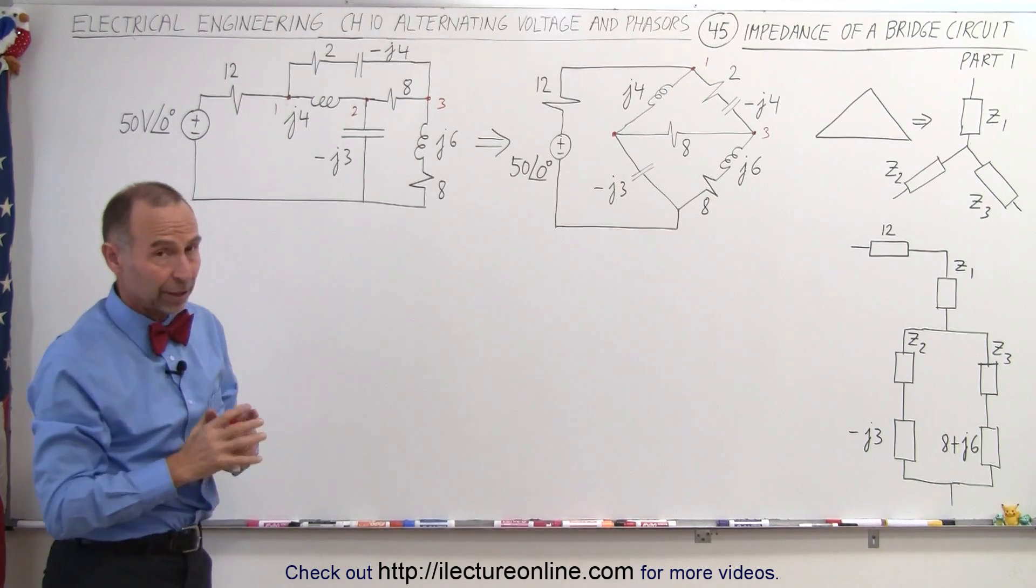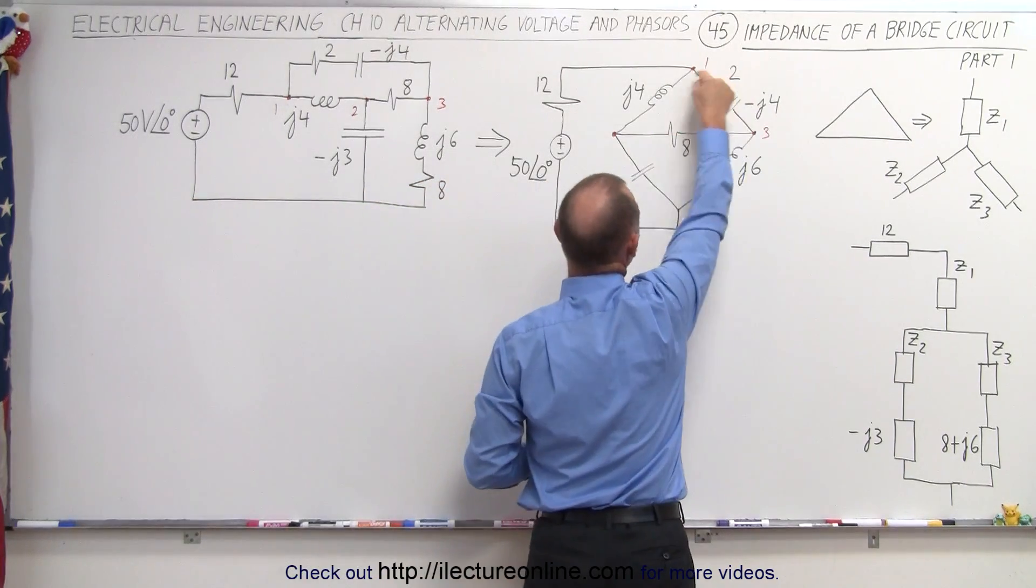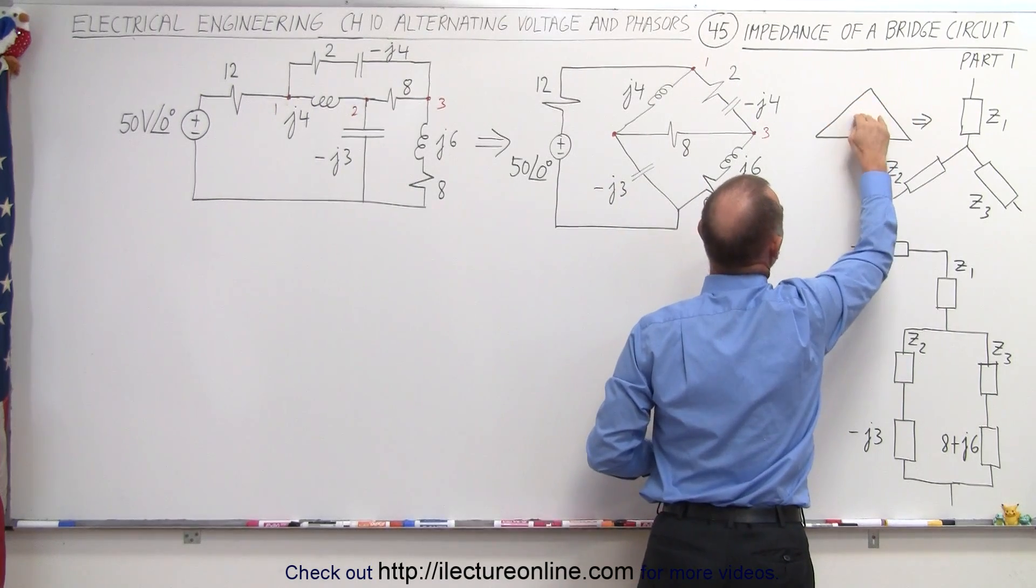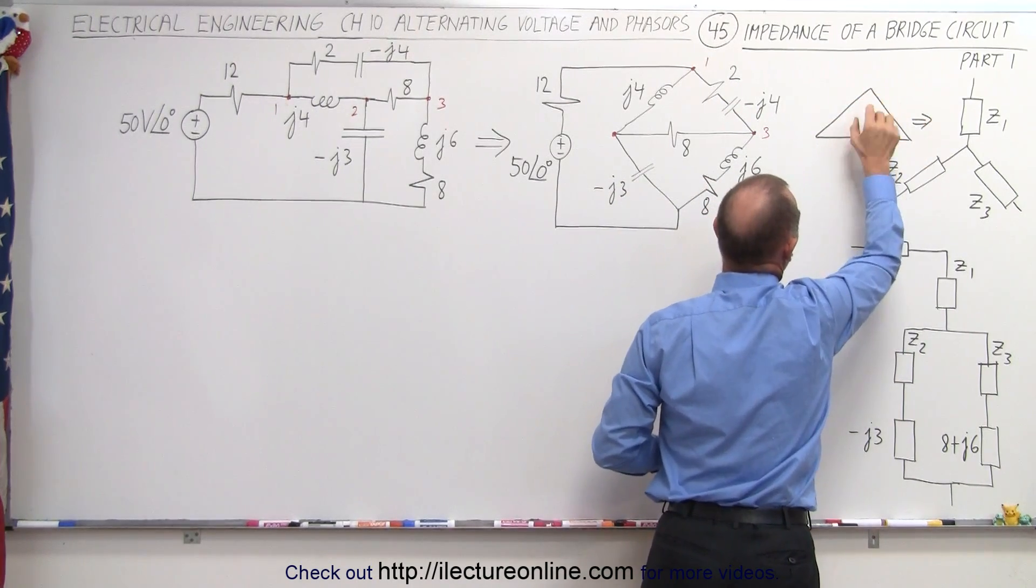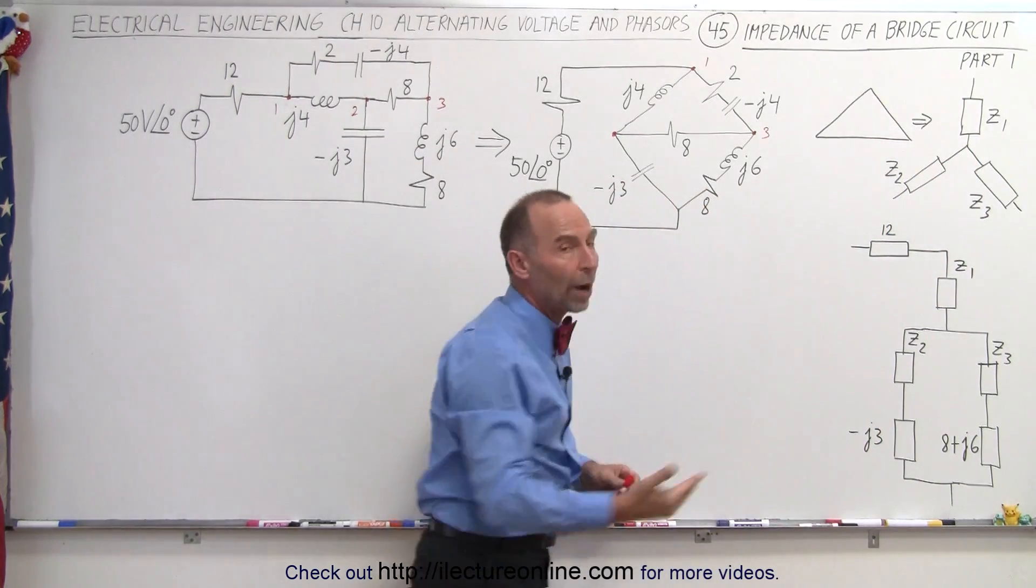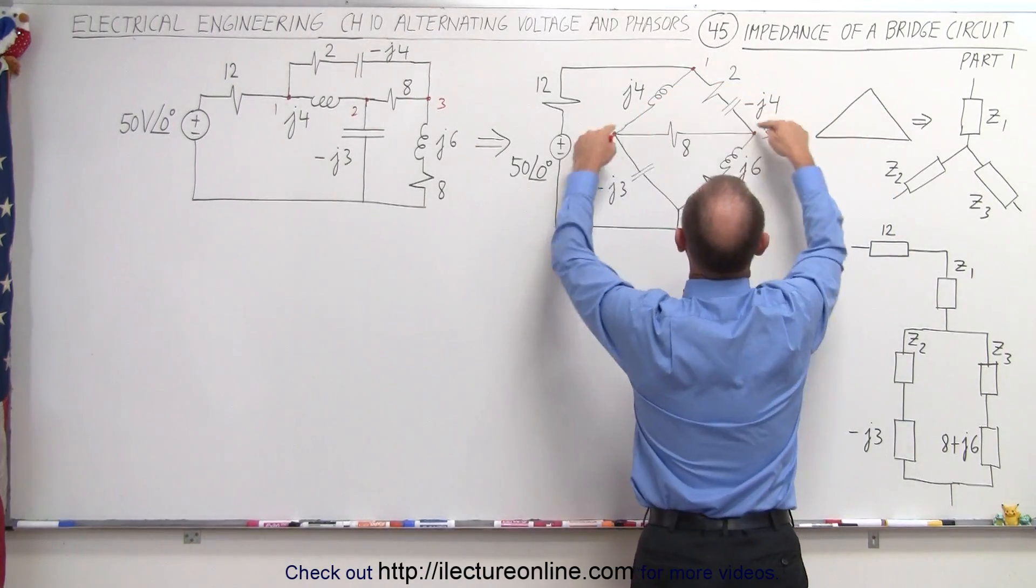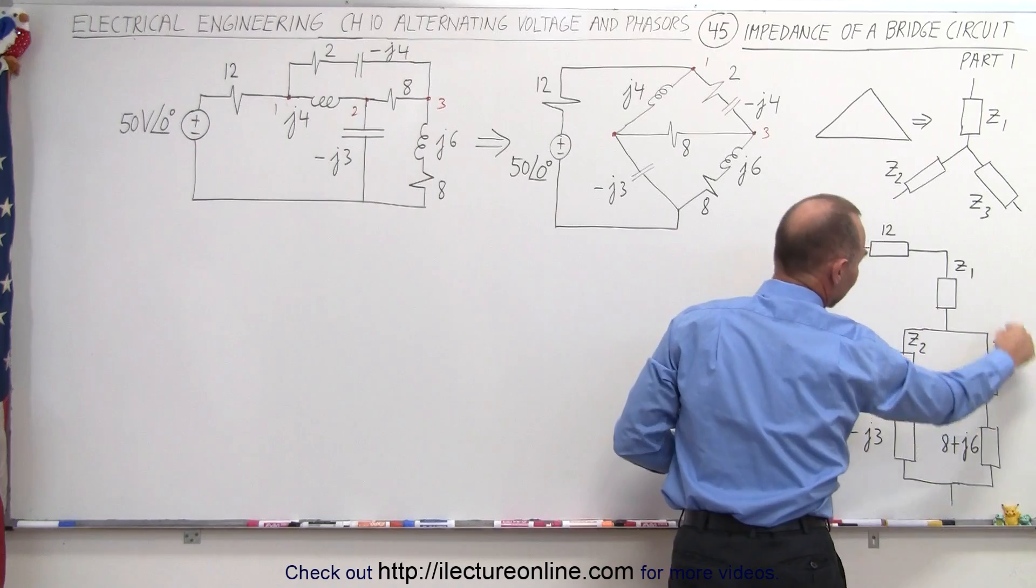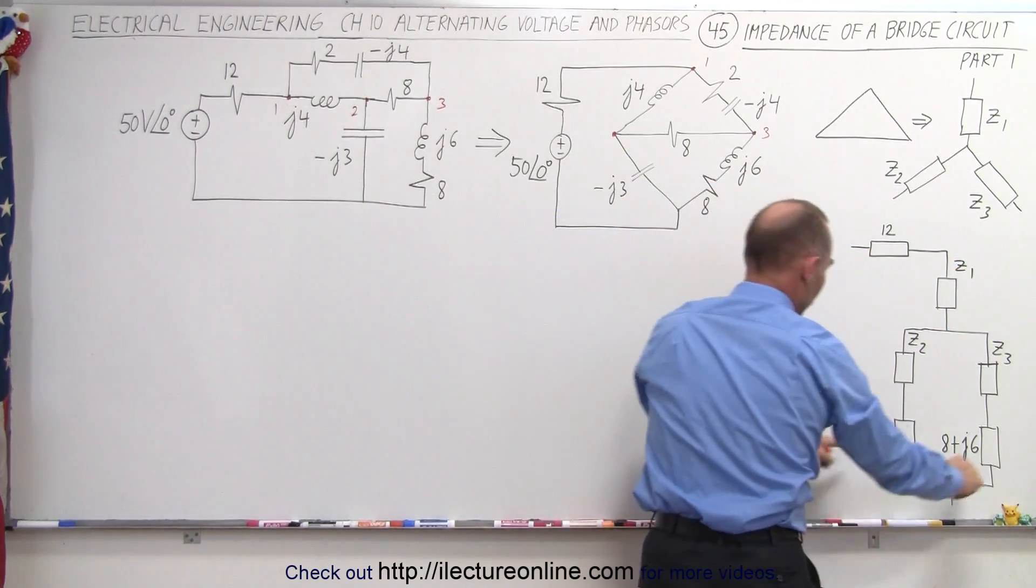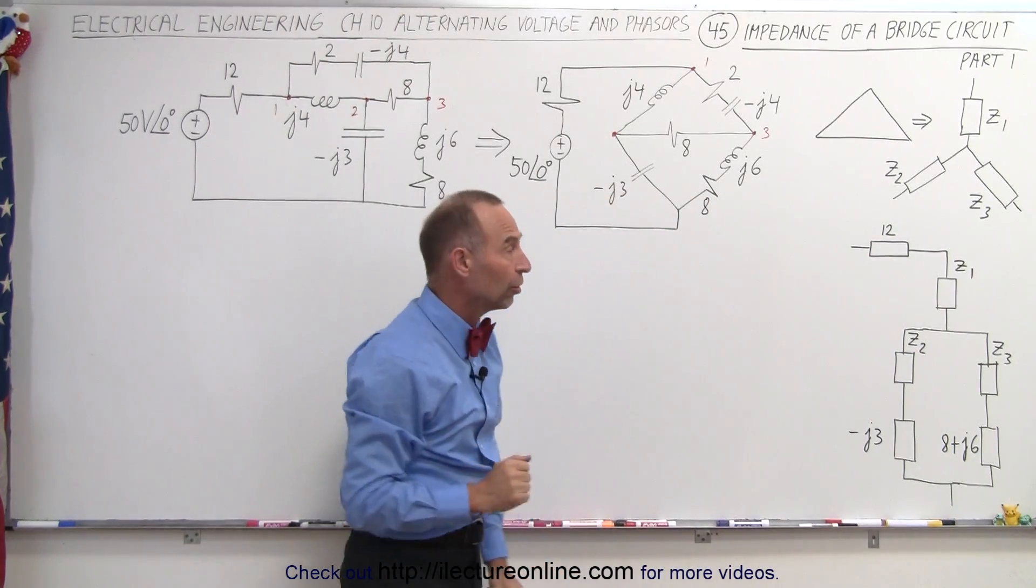Now, trying to solve it like this becomes very difficult. So what we're going to do is we're going to take these three branches right here, and we recognize that as being a delta branch or a delta circuit. We're going to convert that into a Y circuit. So this is becoming a delta to Y conversion. When we do that, instead of having something that looks like this, we'll have something that looks like this. And then we'll connect that to the bottom two branches right here, which are these two branches right here. And then we have a circuit that's much easier to solve.